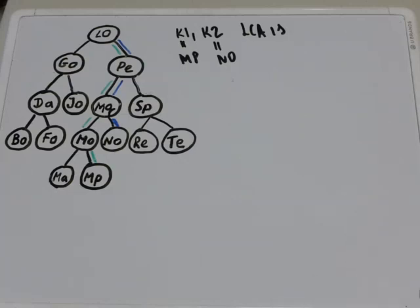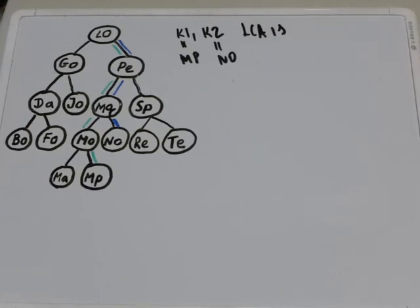In this video I will explain to you how to find the lowest common ancestor of the two given keys, key 1 and key 2, using an easier way than in the previous video.